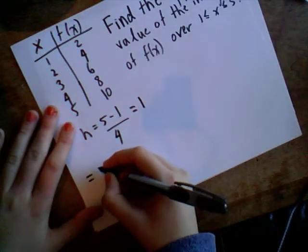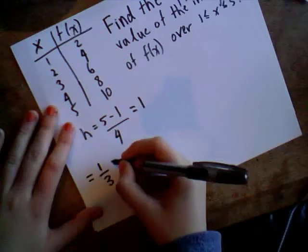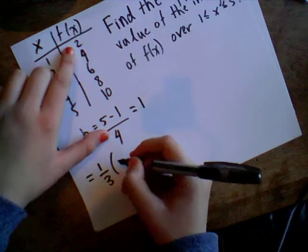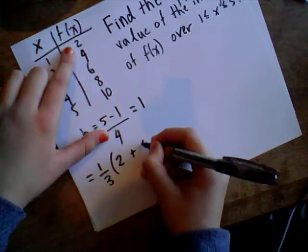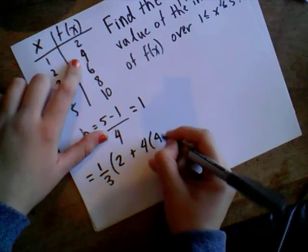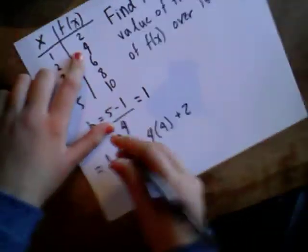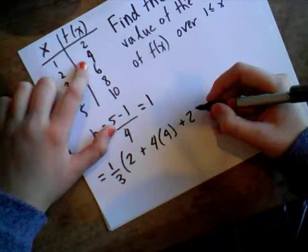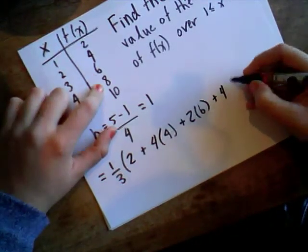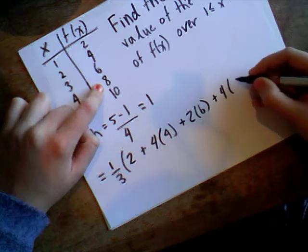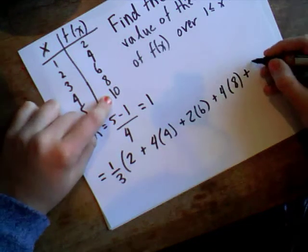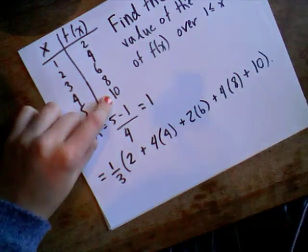We have 1 divided by 3 times f at x0, which is our first one here, 2, plus 4 times f at x1, which is 4, plus 2 times f at x2 is 6, plus 4 times f at x3, which is 8, and then nothing times 10, the last function value.